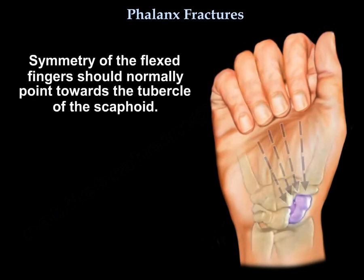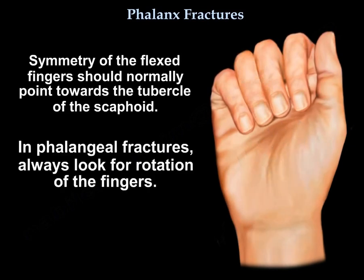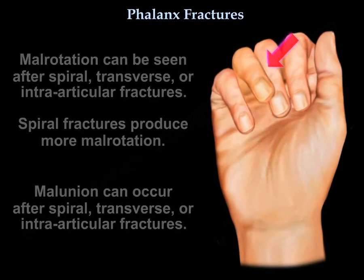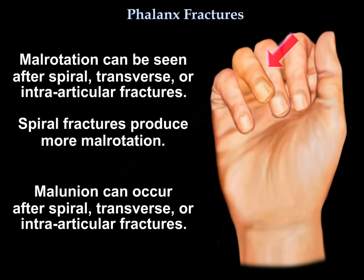Symmetry of the flexed fingers should normally point to the tubercle of the scaphoid. In phalangeal fractures, always look for rotation of the fingers. Malrotation can be seen after spiral, transverse, or intra-articular fractures. Spiral fractures produce more malrotations. Malunion can also occur after spiral, transverse, or intra-articular fractures.